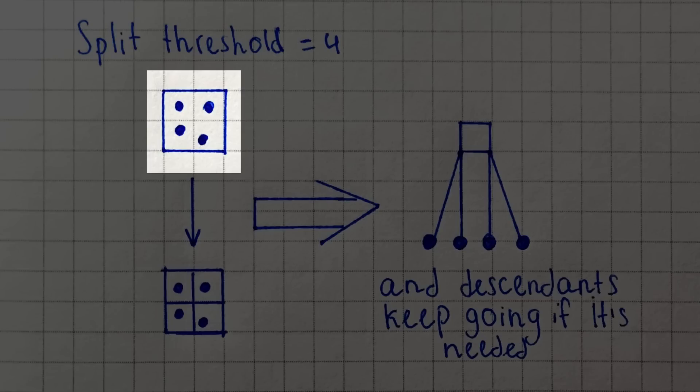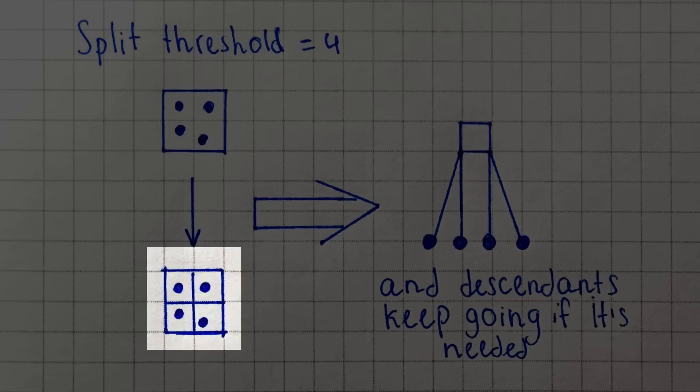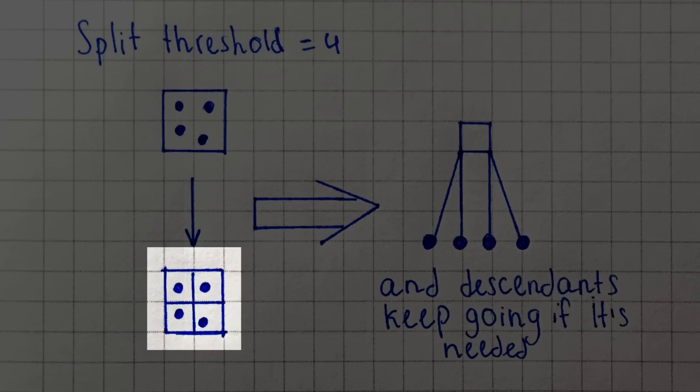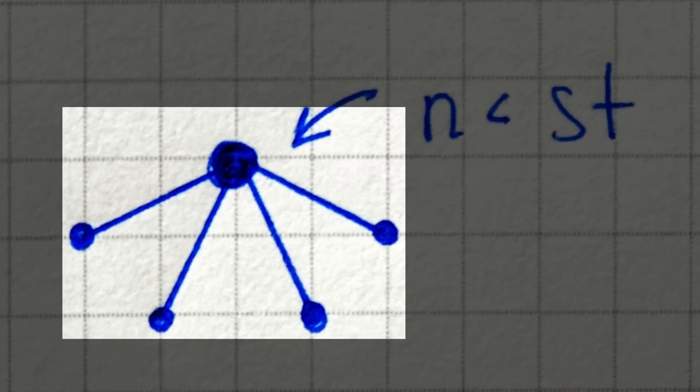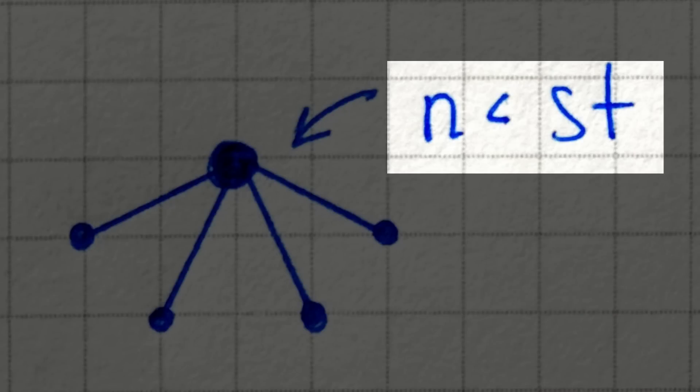Then all the objects of the parent are moved into the children according to their positions. When a parent gets the amount of objects its descendants have in total and sees it is lower than the split threshold, it gets all those objects and puts them into itself, and then gets rid of the children.